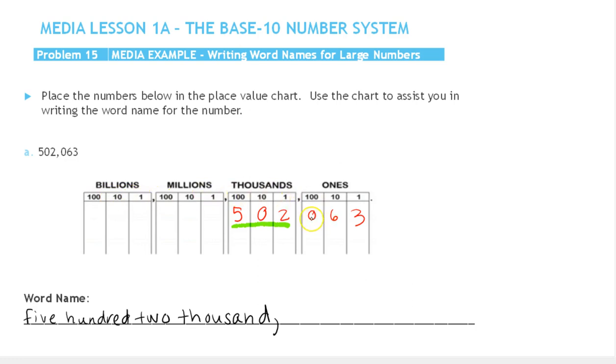Now we're going to write the word name for 063—we would just state this as 63. Sixty-three.